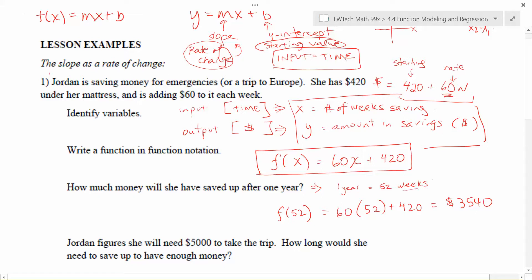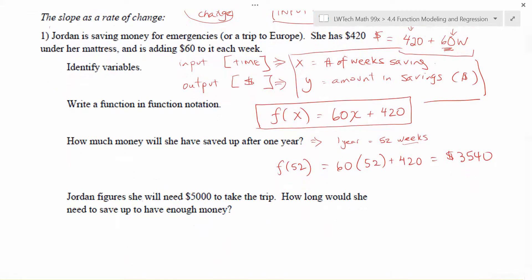And the last problem here, it says Jordan figures she'll need $5,000 to take the trip. How long would she need to solve or would she need to save up to have enough money? Here the question is asking us for how long, so we want to be solving for x. That's the piece of unknown that we don't have. We don't have the number of weeks. We do know that she will need $5,000, so this is our output value. So we can plug that into our equation here. $5,000 is going to be equal to 60x plus 420.